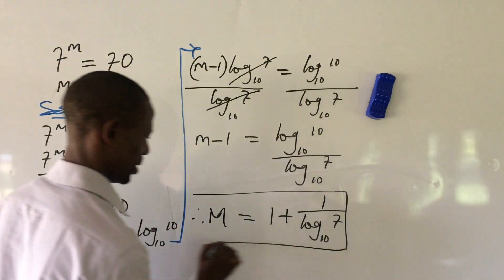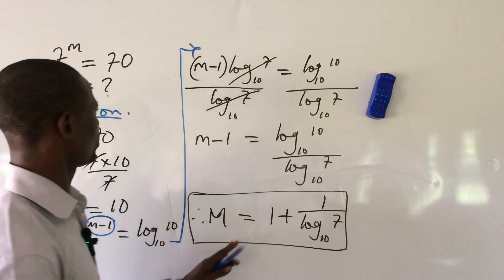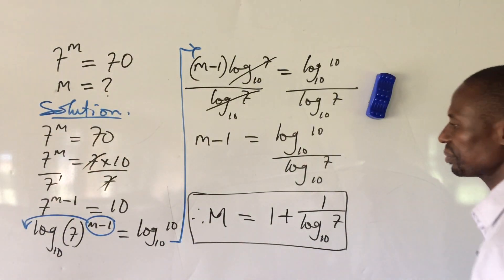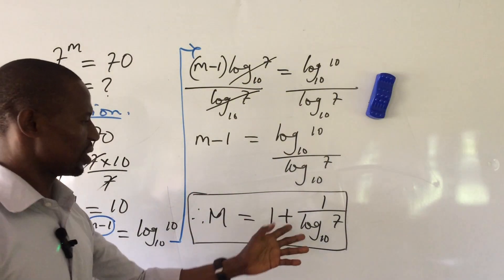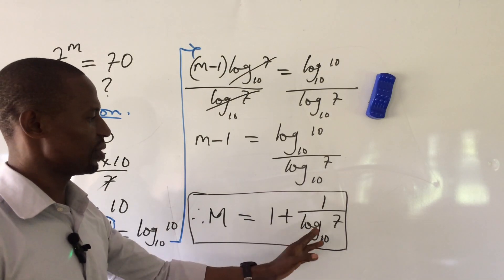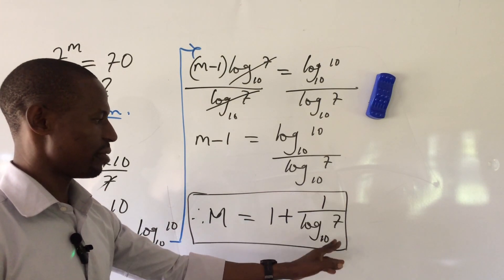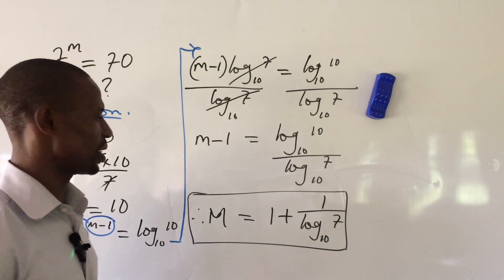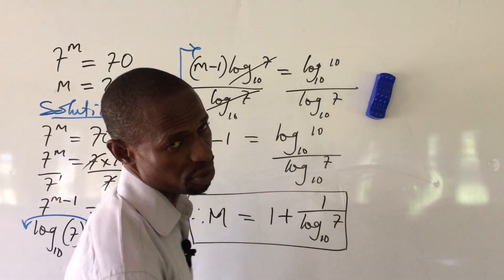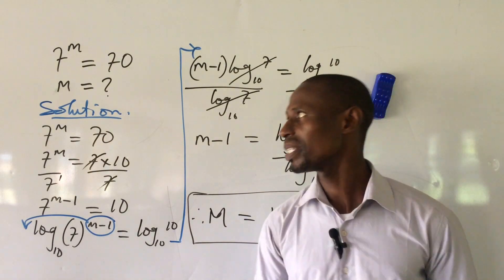So this is the solution to this exponential equation. You can use a calculator to find the log of 7 base 10, divide by 1, then add 1 to this, then put the value into your equation to give you an approximate value.